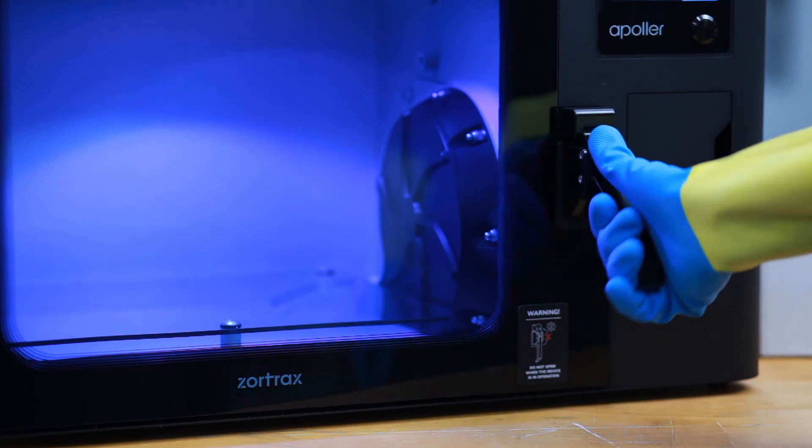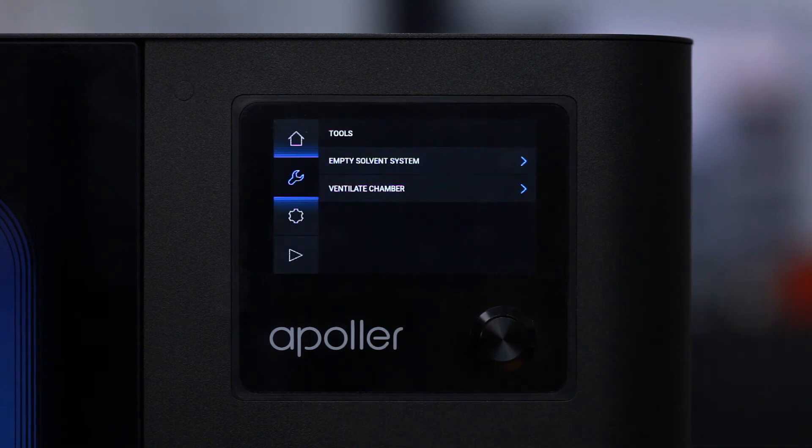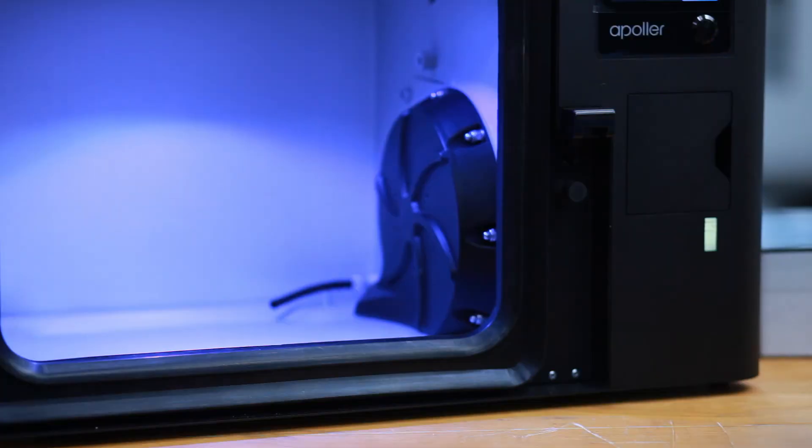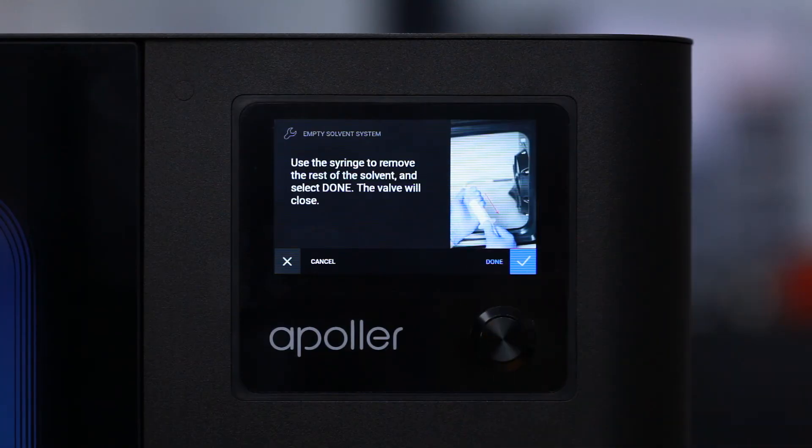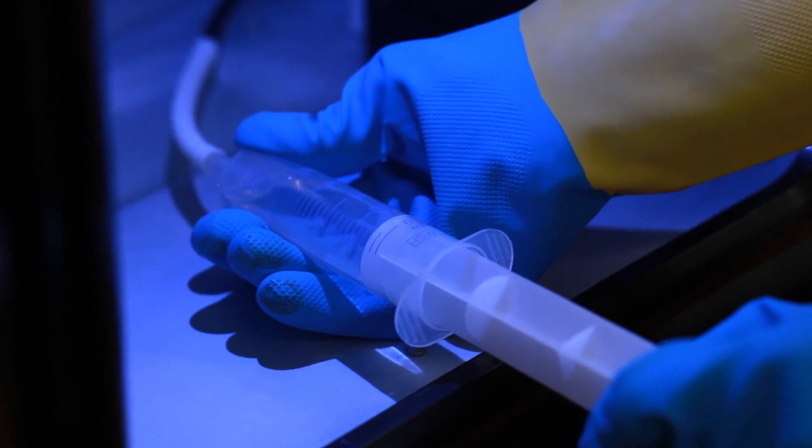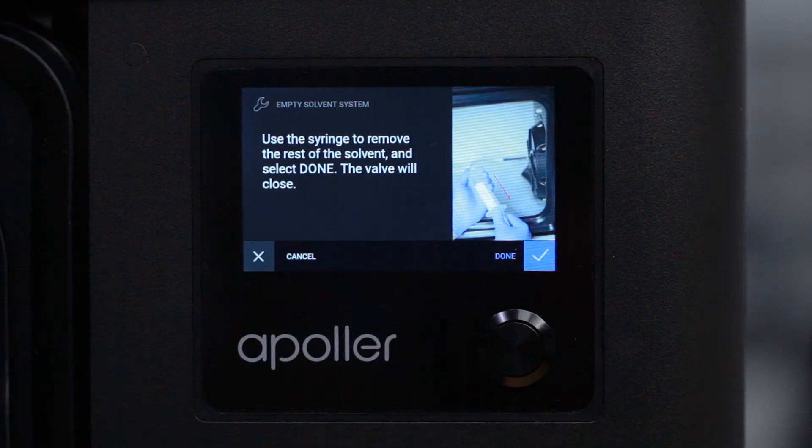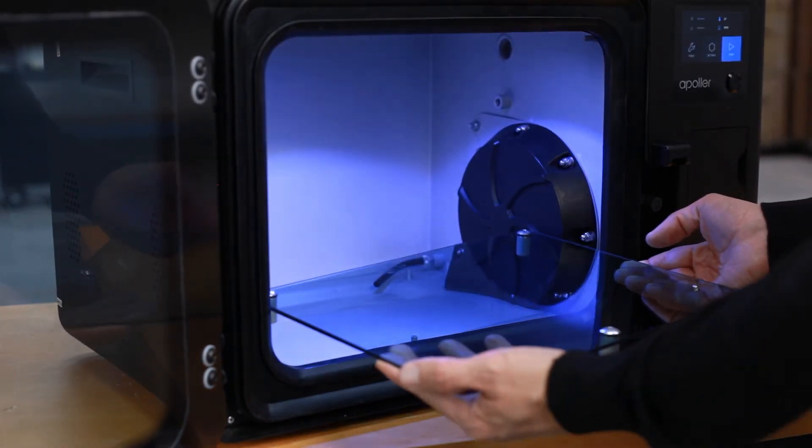Open the chamber door and remove the platform. Select tools and empty solvent system. Put the syringe tube on the drain tube inside the device and start the procedure of emptying the tank. Retract as much solvent as possible and select done on the touchscreen. Remove the syringe from the device and pour the liquid into the container with solvent. Place the platform back on the pins inside the chamber.